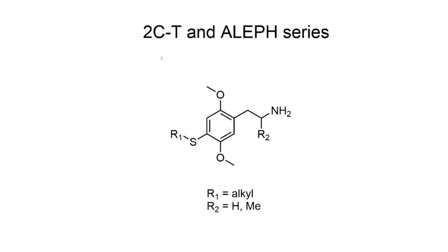Alexander Shulgin synthesized a lot of thioether compounds which are described in PIHKAL. They're the 2CT and the Aleph series. Aleph refers to the amphetamine derivatives where R2 is methyl, and 2CT are the phenethylamines where R2 is hydrogen. They all have a sulfur atom on the aryl ring, and R1 is various alkyl substituents added to explore activity at this position of the 5-HT2A receptor. I thought I'd make a video highlighting some of the interesting parts of Shulgin's experimental write-up.